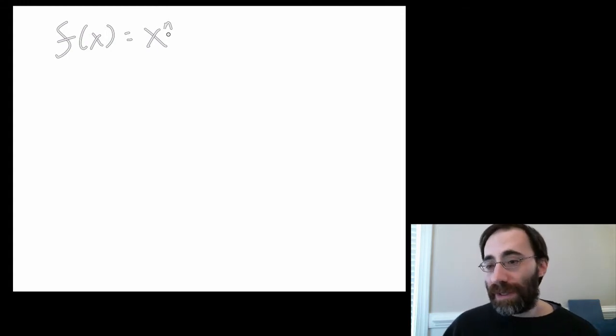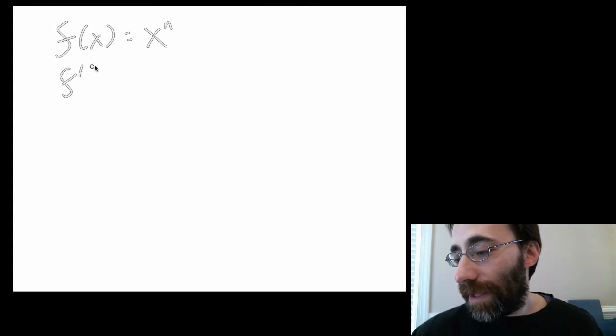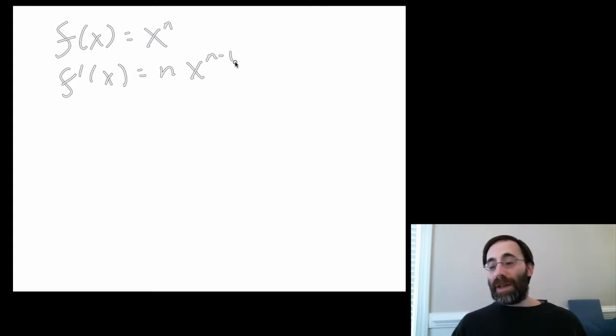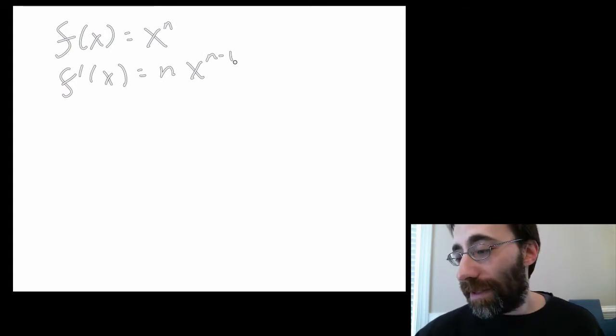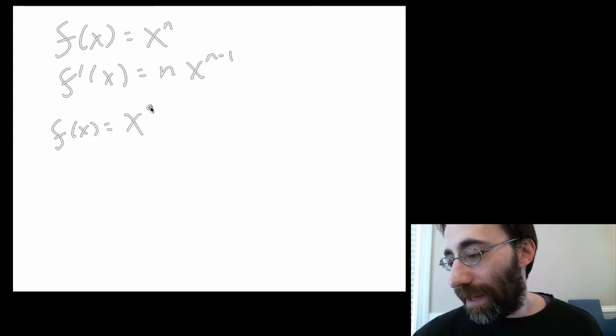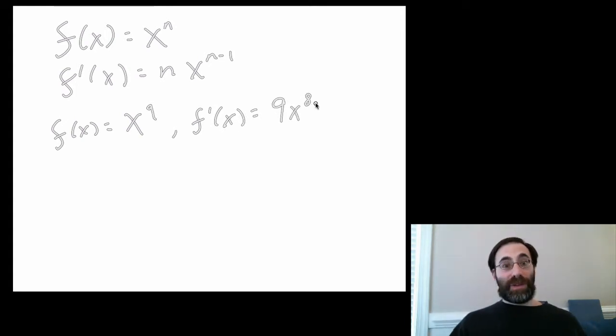How do you do this? Well, in every case, you pull down the n and you subtract 1 from the n up here and you're done. So examples are pretty straightforward. If f of x equals x to the 9th, well, f prime of x equals 9x to the 8th and we don't have to go through the first principles derivative and take (x+h) to the 9th and deal with that. We're just done.